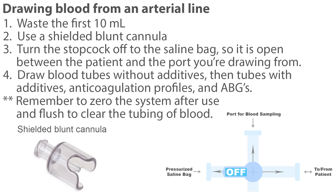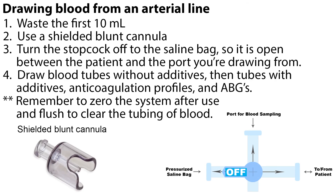When drawing blood from an arterial line, always waste the first 10 milliliters, as this blood is hemodiluted and will not give accurate results. Use a shielded blunt cannula. Turn the stopcock off to the saline bag so it is open between the patient and the port you're drawing from. Draw blood tubes without additives first, then tubes with additives, anticoagulation profiles, and ABGs.